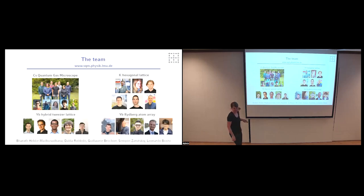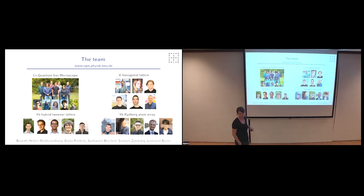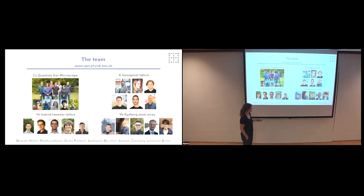So that's the team — I'm not doing this alone. That's the cesium quantum gas microscope team and the hexagonal lattice team. We have two new experiments that use the properties of Ytterbium atoms — the two-valence-electron atoms — to first make use of the optical clock transition, and also to have more flexibility in terms of local state-dependent potentials. We make use of tweezer arrays to have local manipulation of the motion and state of the atoms. Thank you very much.